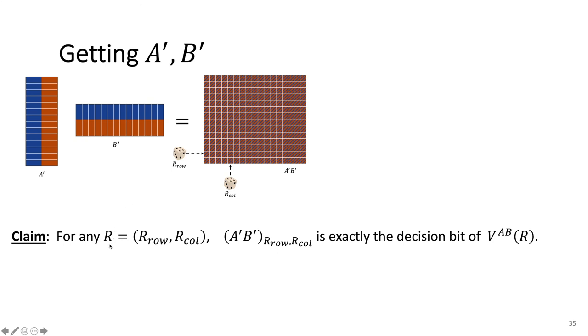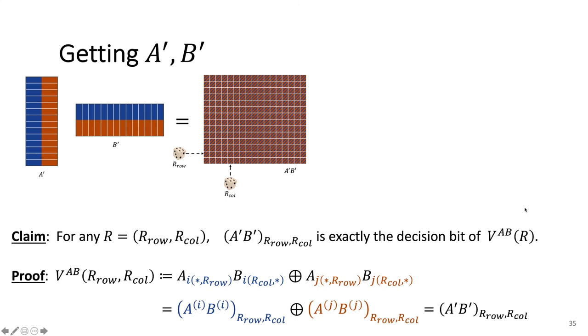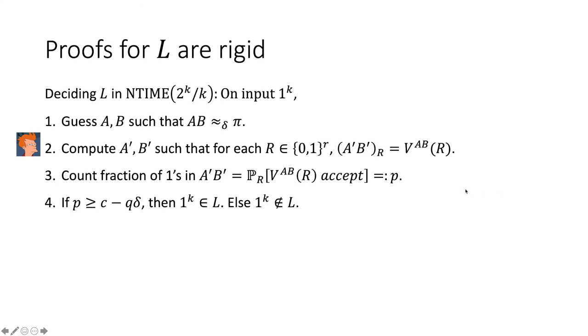And you can already maybe start to see a similarity to what we had written as the verifier's decision, and if you don't, let me spell it out for you. So the claim is that for any possible randomness, the randomness indexes the rows of A prime and B prime, the corresponding entry in A prime times B prime is exactly the decision bit of the verifier, or it's exactly the decision that the verifier makes on this random coin sequence. And the proof, and this is where those yellow scrolls come in handy, the proof is just by stringing together all of these observations we made. We've seen exactly why this is the case. So hopefully now I managed to convince you that computing the computational matrix can be done, and we saw that it was a very easy computation, assuming the indexing function is easy, which of course it is.